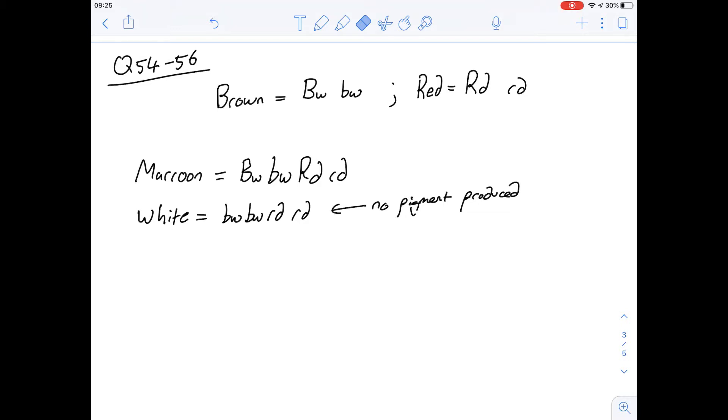So this is a question about genetics and unsurprisingly it's about eye colour. We're told that there's two genes, brown and red, and different combinations of those can end up with a phenotype of red eyes, brown eyes, a mix of the two being maroon, and neither being white where no pigment is produced. I've copied that information out here.